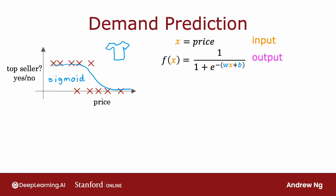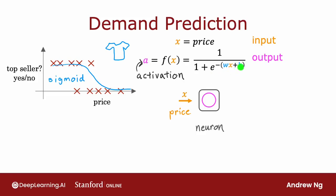Previously, we had written this as f of x as the output of the learning algorithm. In order to set us up to build a neural network, I'm going to switch the terminology a little bit and use the alphabet A to denote the output of this logistic regression algorithm. The term A stands for activation, which is a term from neuroscience referring to how much a neuron is sending a high output to other neurons downstream from it. And it outputs the probability of this t-shirt being a top seller.